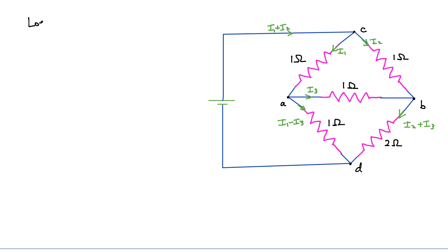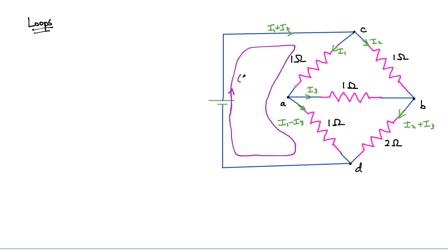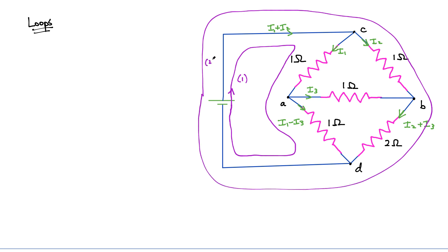The next step is to define all the loops I'll use to set up my equations. Loop one goes around the inner left path. Loop two goes all the way around the outer path. Loop three uses one of the interior loops. For loops one and two I'll start at the same point and go clockwise. For loop three I'll start at junction C and again go around in the clockwise fashion, adding all the potential differences when I encounter resistors.